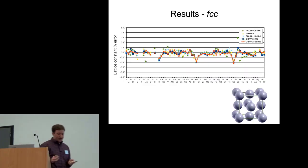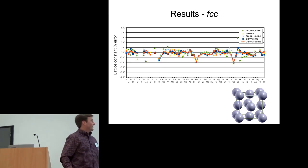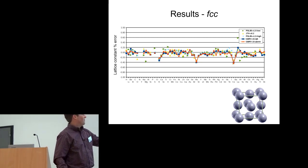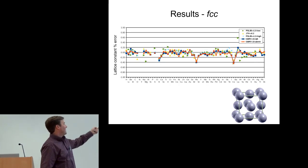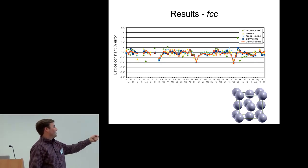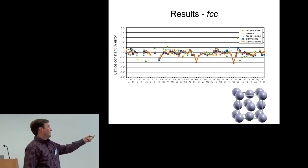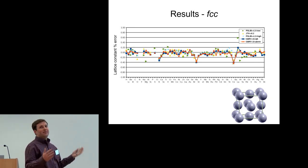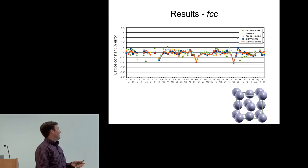I'll show a couple plots like this, which have a bunch of elements, and this is the lattice constant percentage error. The GBRV results, which I'm going to focus on, are these with the solid lines to help them stand out. You can see that basically all of these pseudo potential sets now agree on the FCC lattice constants to within a plus or minus 0.2% error.